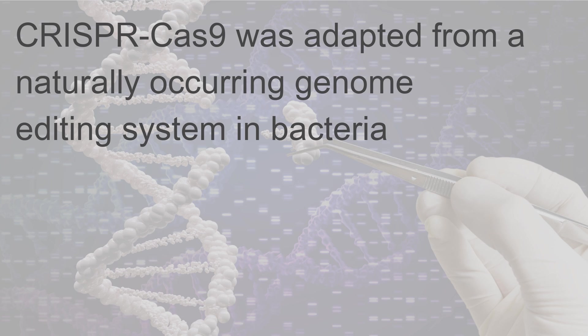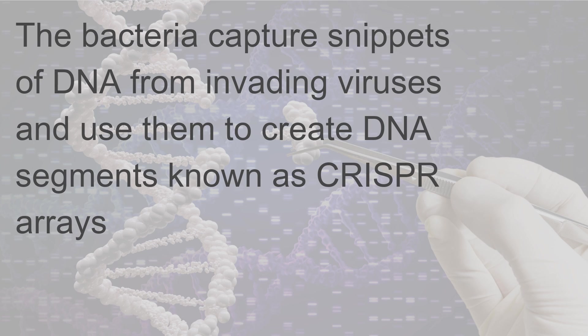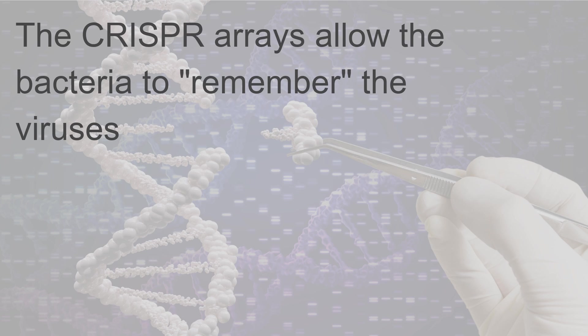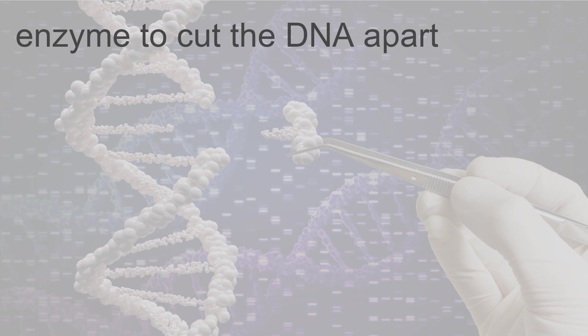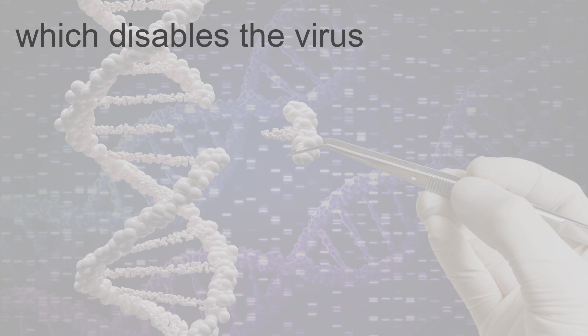CRISPR-Cas9 was adapted from a naturally occurring genome editing system in bacteria. The bacteria capture snippets of DNA from invading viruses and use them to create DNA segments known as CRISPR arrays. The CRISPR arrays allow the bacteria to remember the viruses. If the viruses attack again, the bacteria produce RNA segments from the CRISPR arrays to target the virus's DNA. The bacteria then use Cas9 or a similar enzyme to cut the DNA apart, which disables the virus.